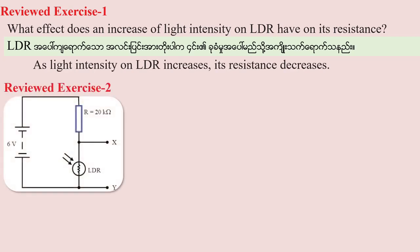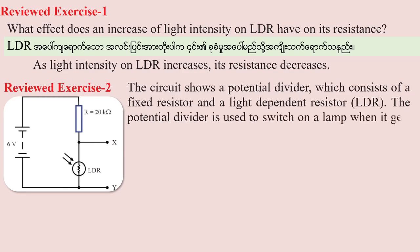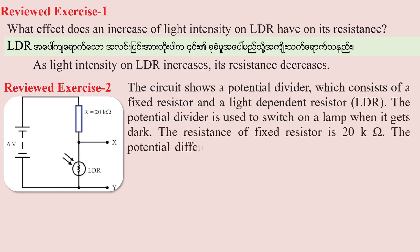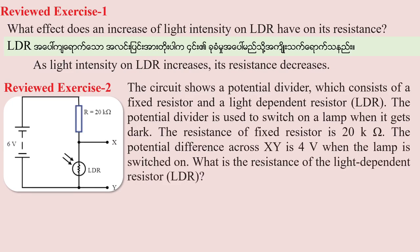The circuit shows a potential divider which consists of a fixed resistor and a light-dependent resistor. The potential divider is used to switch on a lamp when it gets dark. The resistance of the fixed resistor is 20 kilohms. The potential difference across XY is 4 volts when the lamp is switched on.